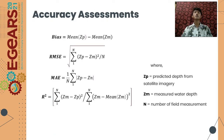The accuracy of the derived satellite bathymetry was assessed through the analysis of statistical errors, which are the bias, the root mean square error, the mean absolute error, and the Pearson's correlation.